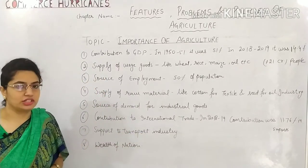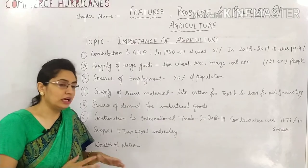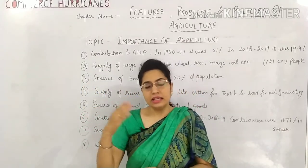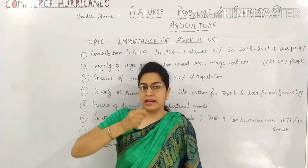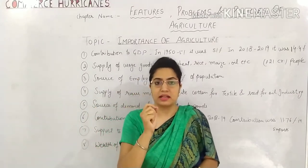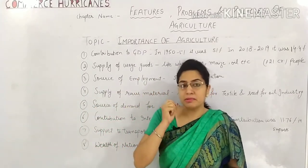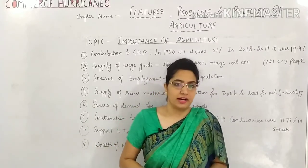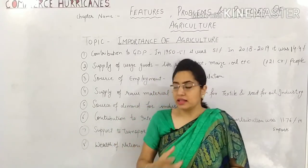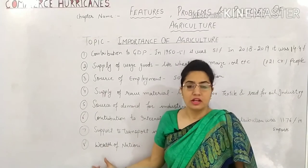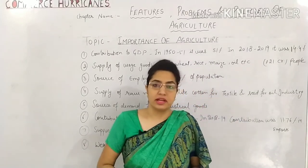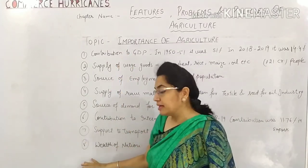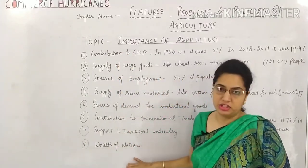And the last point is Wealth of Nations. What is the wealth of our country? In every country something is special. In our country, it is special that we have agricultural land. In the world, very few countries have as much agricultural land as we do. So we can say that this is our wealth, and we should save it and improve it. Agriculture is important because it is the wealth of nations.